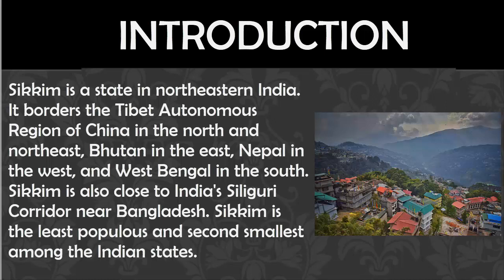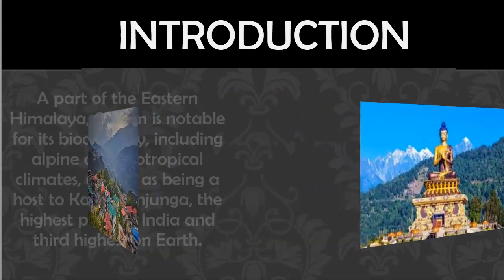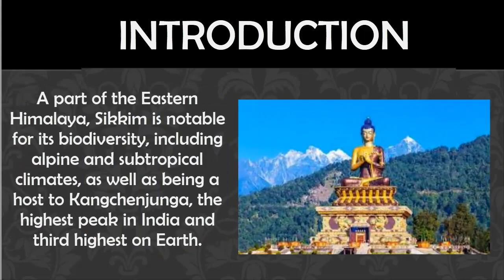Sikkim is also close to India's Siliguri Corridor near Bangladesh. Sikkim is the least populous and second smallest among the Indian states. A part of the eastern Himalaya, Sikkim is notable for its biodiversity, including alpine and subtropical climates, as well as being host to Kanchenjunga, the highest peak in India and the third highest on earth.